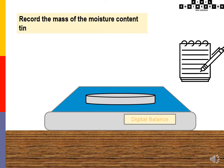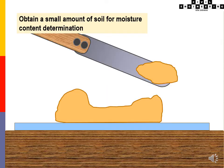Record the mass of the moisture content tin. Obtain a small amount of soil for moisture content determination.